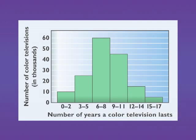So 12 to 14 years is the next to last bar of our histogram, and you'll see that that's 15,000 television sets. And those that lasted between 15 and 17 years was 5,000 television sets.